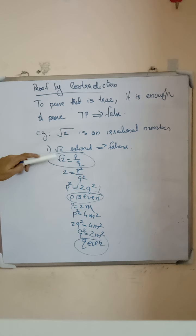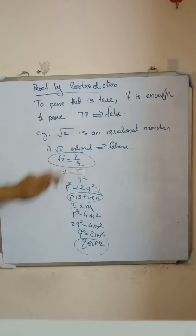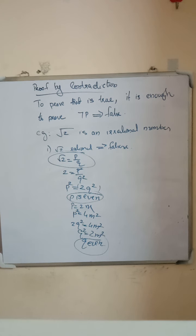But we assumed that √2 = P/Q where P and Q are integers having no common factors. So we arrive at a contradiction because of our wrong assumption that √2 is a rational number. Therefore, the result is that √2 is an irrational number. In proof by contradiction, we assume the statement is false, then prove it is true by the contradiction method.